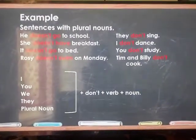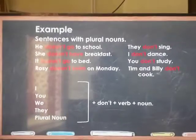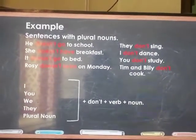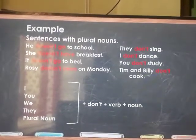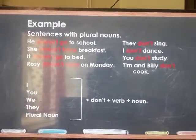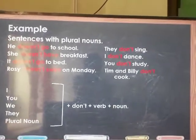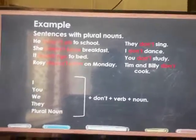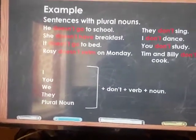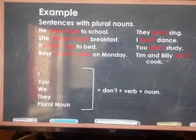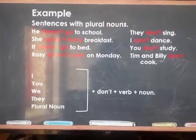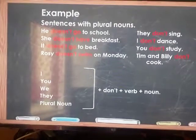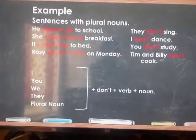Example sentences with singular nouns: 'He doesn't go to school. She doesn't have breakfast. It doesn't go to bed. Rosie doesn't swim on Monday.' For plural nouns and pronouns — they, I, you, we — we use 'don't': 'They don't sing. I don't dance. You don't study. Tim and Billy don't cook.'